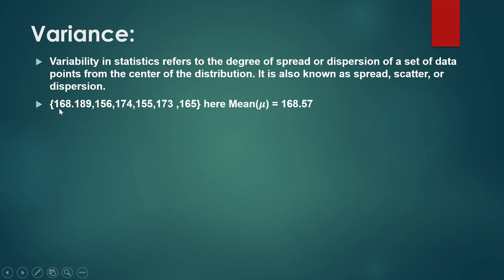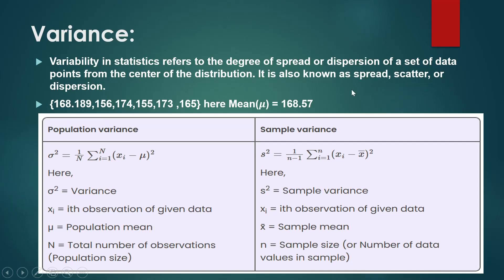So if we talk about the mean value, we will talk about diversity and spread. Dispersion is also known as spread, scatter, or dispersion of the data points around the mean.